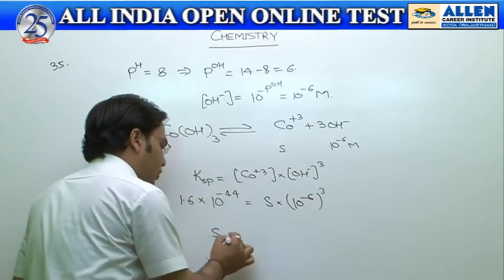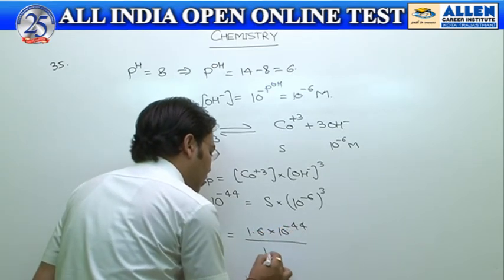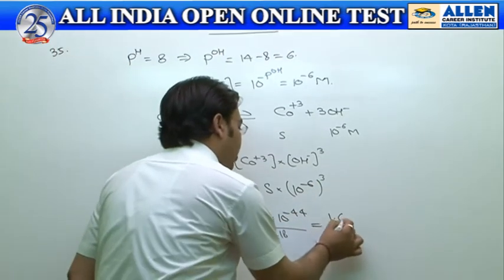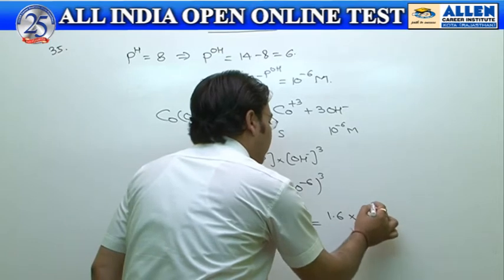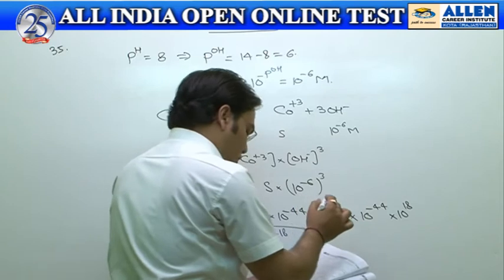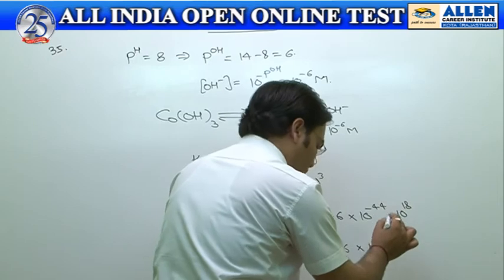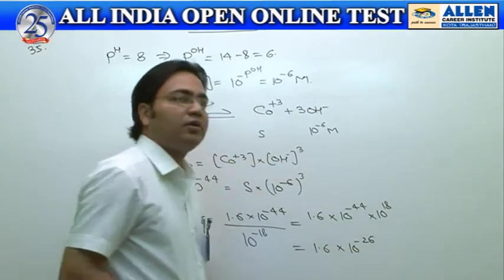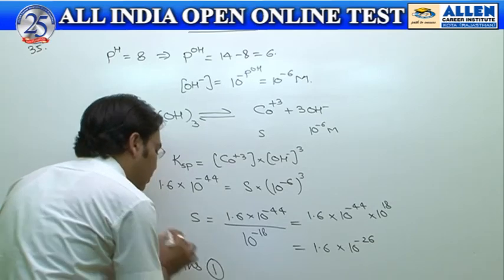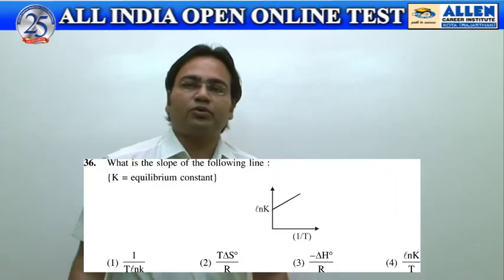So s equals 1.6 times 10 to the power minus 44 divided by 10 to the power minus 18, which equals 1.6 times 10 to the power minus 44 times 10 to the power 18. After solving, we get 1.6 times 10 to the power minus 26, and this answer is given in the first option. The correct answer should be 1.